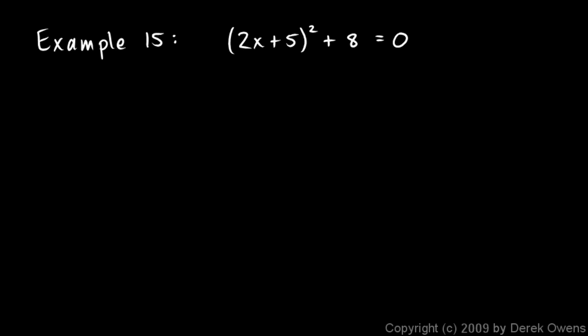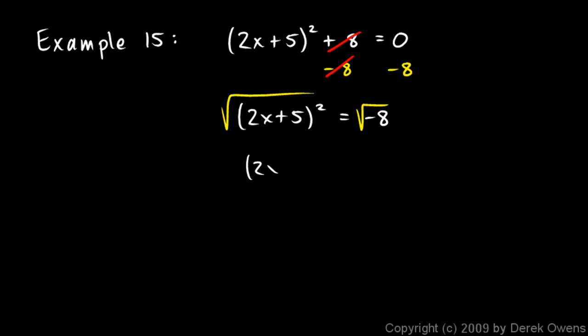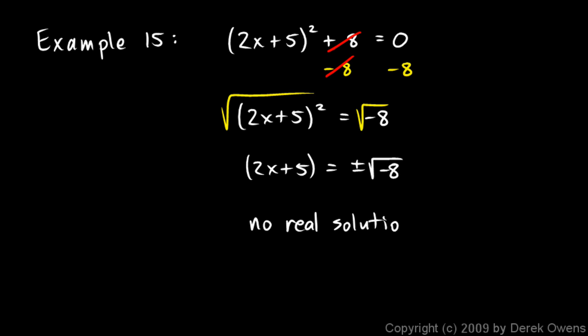One more example: 2x plus 5 squared plus 8 equals 0. First we need to isolate the thing that is squared, then we'll square root. So let's subtract 8 from each side, and that gives me 2x plus 5 squared equals negative 8. If I try to take the square root of each side, I get 2x plus 5 on the left, and plus or minus the square root of negative 8 on the right. When I end up with a negative number under my radical, I stop — there's no real number solution. So I'll just write: no real solution. Because we can't take negative square roots, at least not yet.